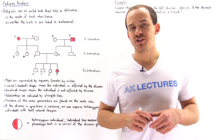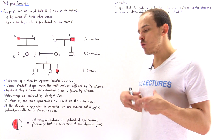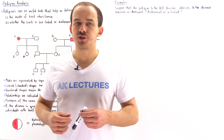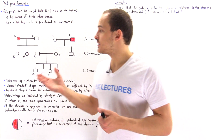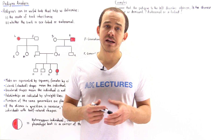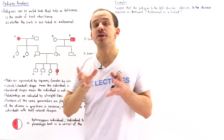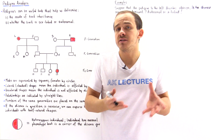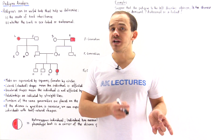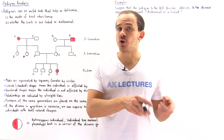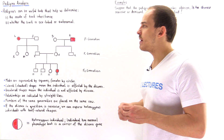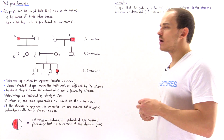A pedigree is a tool used by geneticists that helps them discover the way that a trait for some disease is passed down from one generation to another. By analyzing a pedigree, like the one shown on the board, geneticists can discover two important things: the mode of trait inheritance — whether the trait is recessive or dominant — and whether that trait is found on the sex chromosome (the X chromosome) or on an autosome.